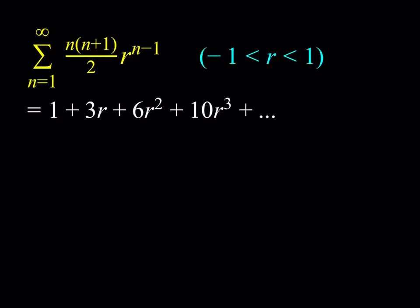Hello everyone. In this video we're going to be evaluating an infinite sum. We have 1 plus 3r plus 6r squared plus 10r to the third power plus dot dot dot, and we're going to be evaluating the sum where r is between negative 1 and 1 so that we can get a convergent series. It's also given with sigma as n times n plus 1 divided by 2 times r to the power n minus 1.